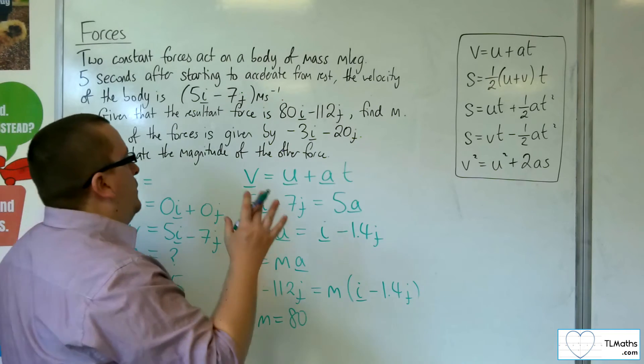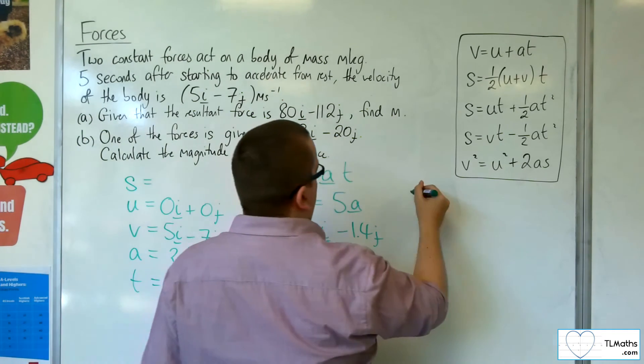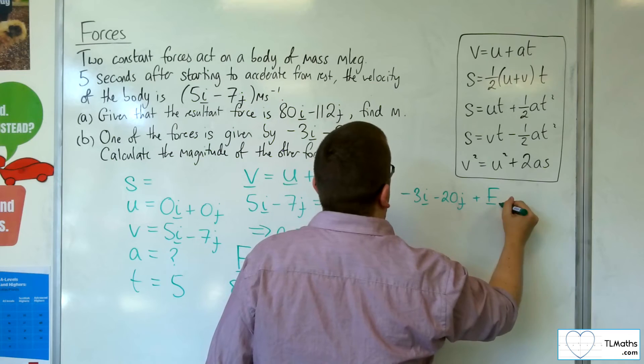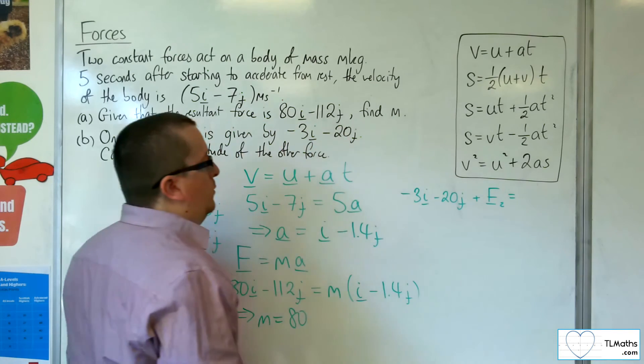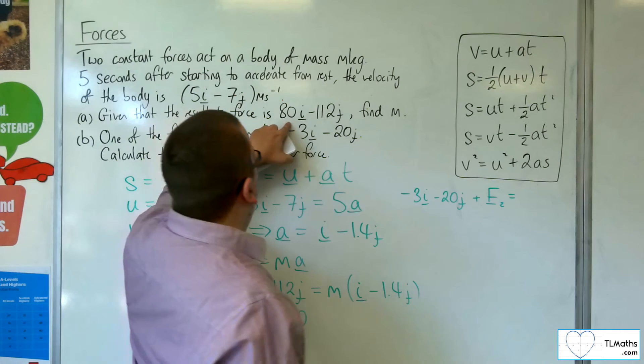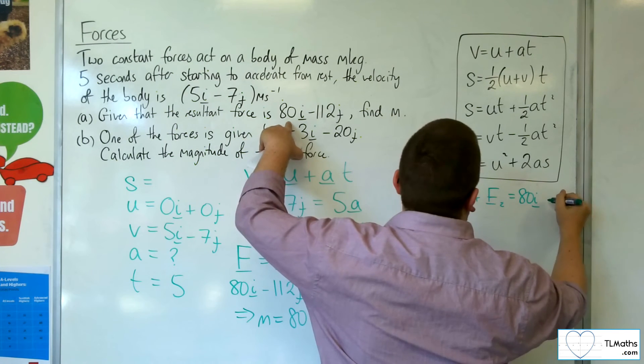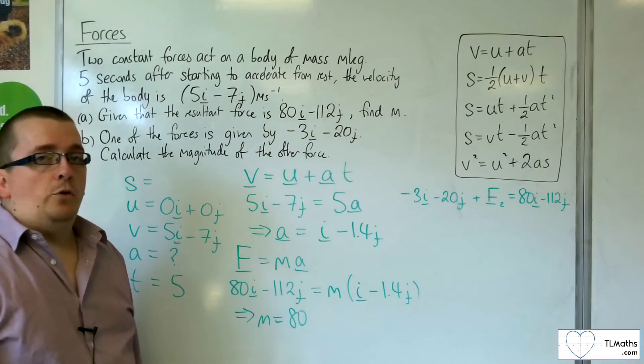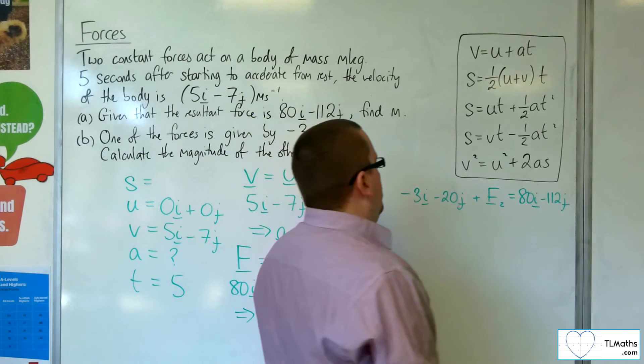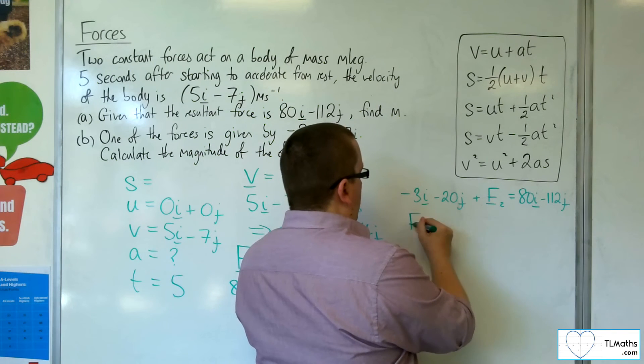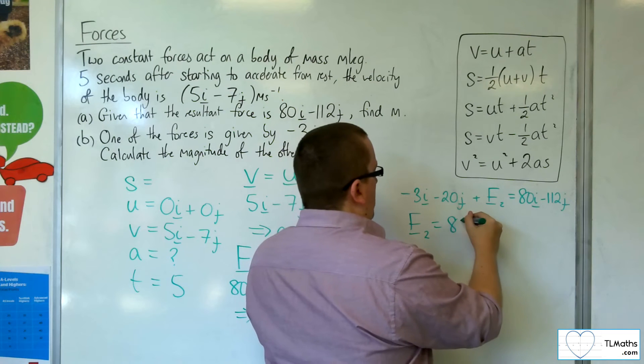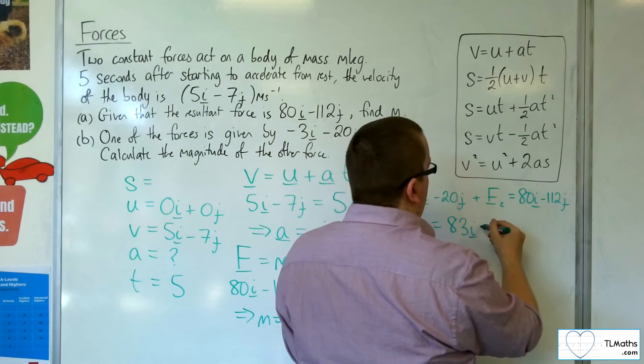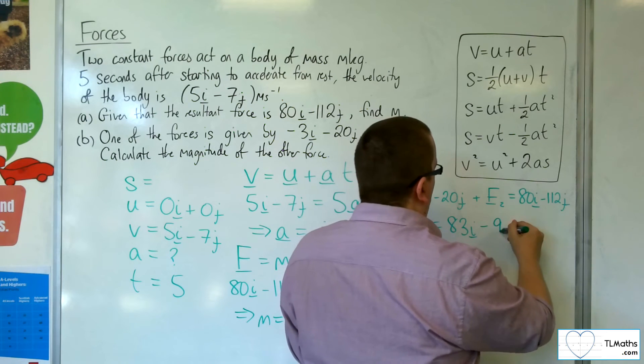If we've got these two forces, here's one. So minus 3i minus 20j plus this second force, which we'll call f2, must be equal to the 80i minus 112j, that resultant force. So we can add the 3i to both sides to get the f2. We're going to get 83i. And then add the 20j to both sides. So we get minus 92j.